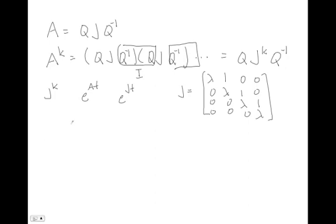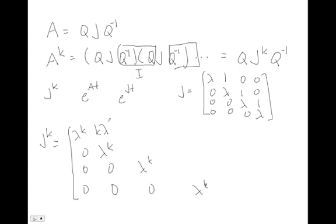Well if you do this matrix multiplication explicitly a pattern will emerge and you'll see that J to the k looks like lambda to the k on all the diagonals. And I should start writing these spread out more because these other terms start getting really big. So lambda k on the diagonals and then k lambda to the k minus one on the super diagonals.